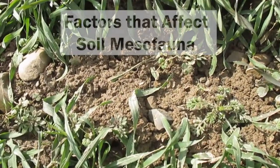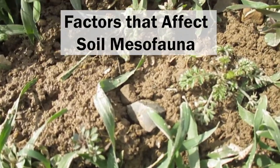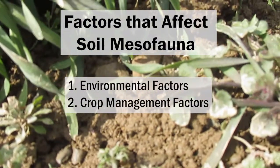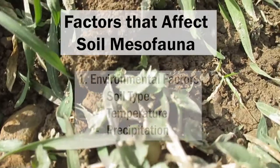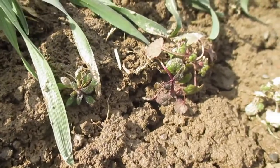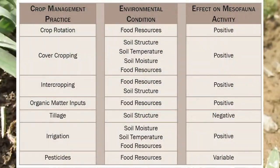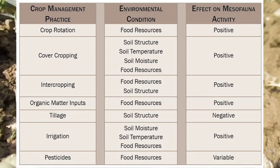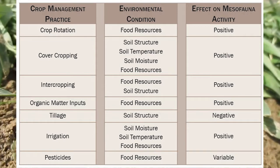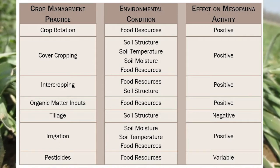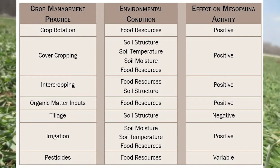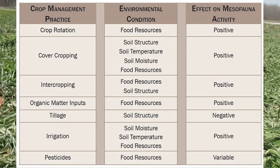Keep in mind that many factors will influence what mesofauna you find in your soil samples. These factors can be thought of in two areas: environmental factors, and crop management factors. Environmental factors include soil type and climate conditions including temperature and precipitation — oftentimes we have little control over these. Crop management factors include practices like tillage and fertilization. Soil disturbance through tillage generally decreases mesofauna abundance, whereas fertilization generally increases mesofauna abundances, especially when applying organic fertilizer sources that are rich in carbon.